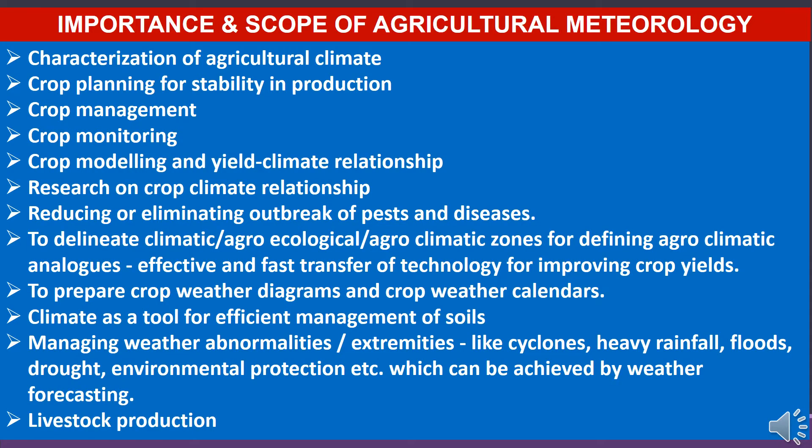Here we will discuss the importance and scope of agriculture meteorology. First is characterization of agriculture climate. Second, for determining crop growing season — solar radiation, air temperature, precipitation, wind, humidity etc. are important climatic factors on which the growth, development and yield of a crop depend. Third is crop planning for stability in production — to reduce risk of crop failure on climatic grounds, suitable crops, cropping patterns and contingent cropping plans can be selected by considering water requirements of the crop, effective rainfall and available soil moisture.